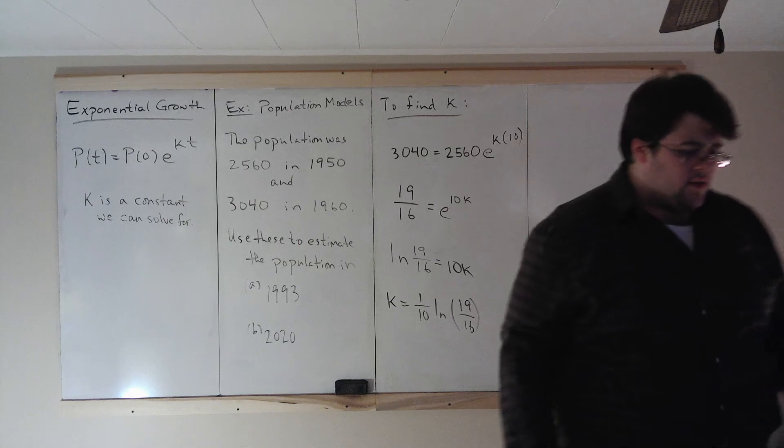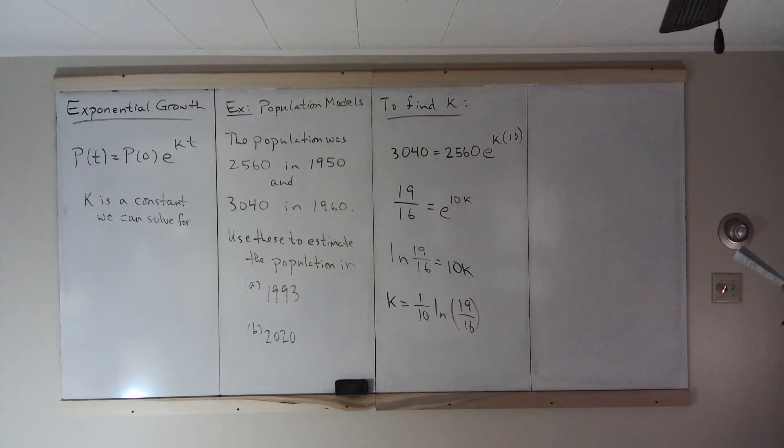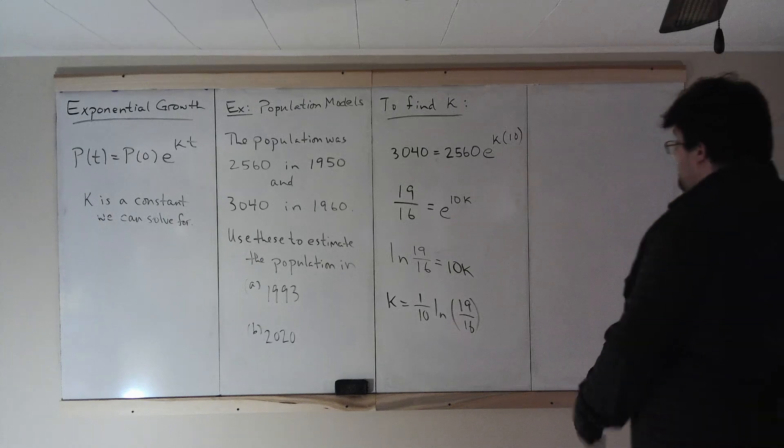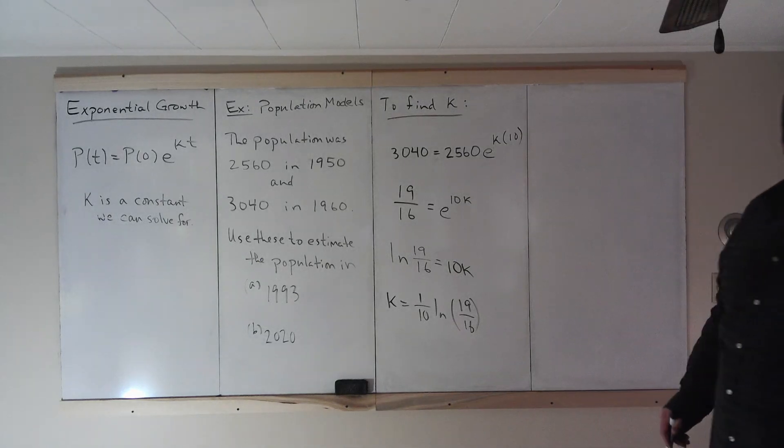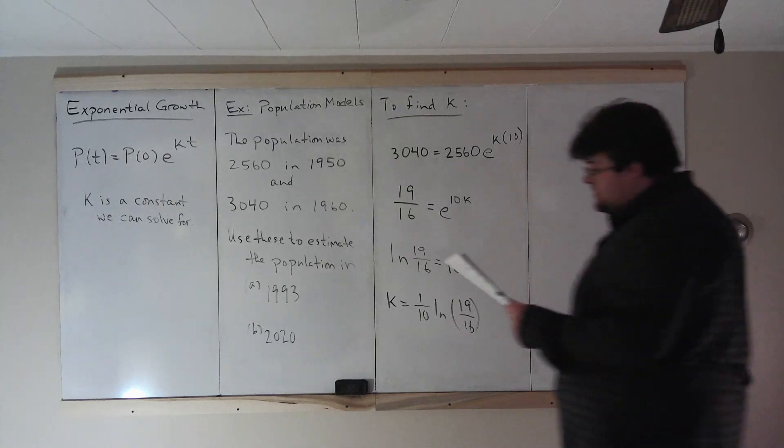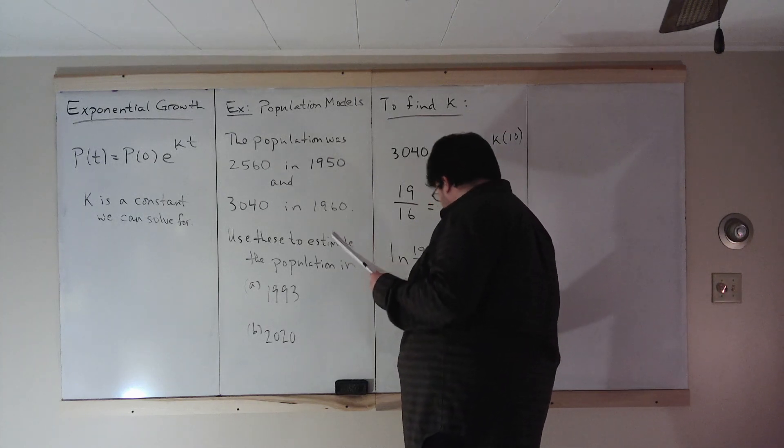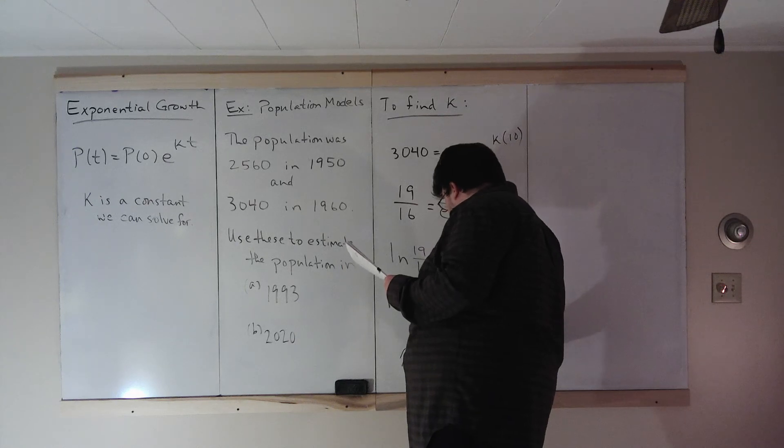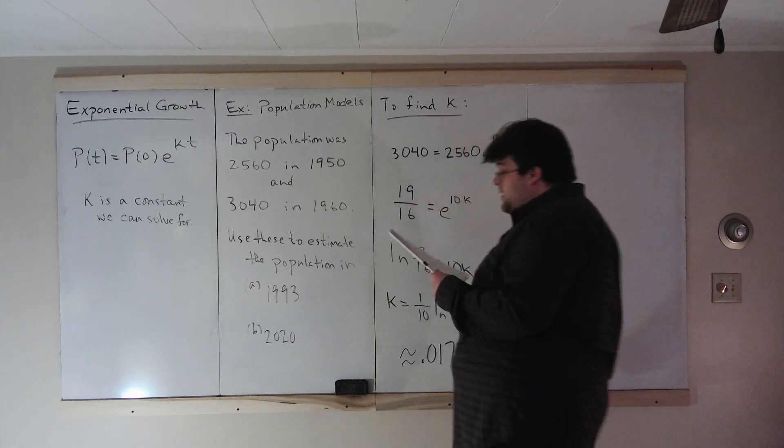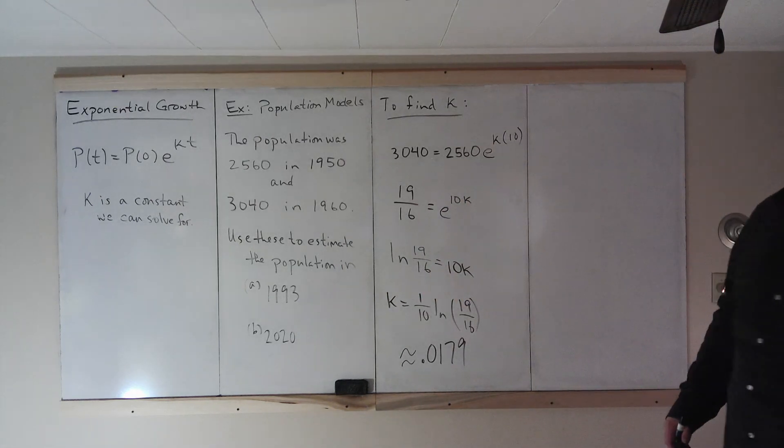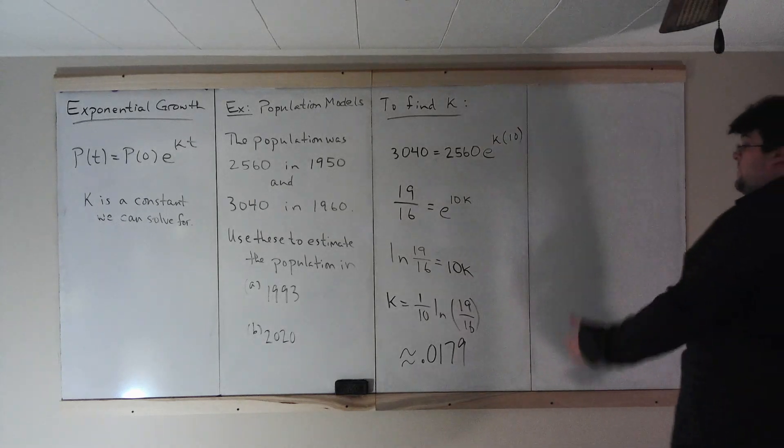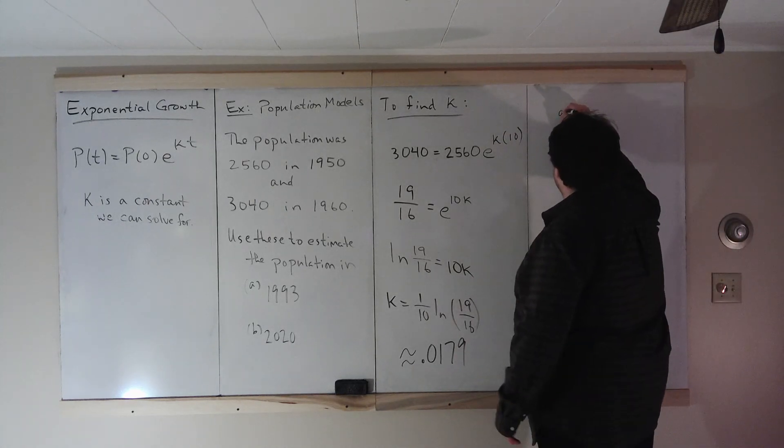I'm just going to check that that's right. 19 sixteenths. We could leave it like this. I'm just going to use the decimal for it. As a decimal, this is 0.0179. So now we have that growth constant. We can use that to find the populations in these future years.